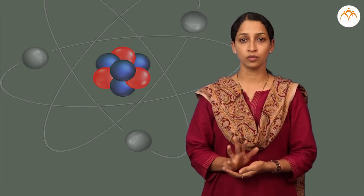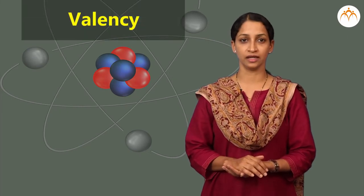Therefore, when ionic bonds are formed, atoms of the element give or take electrons, and this number is the valency of that element.